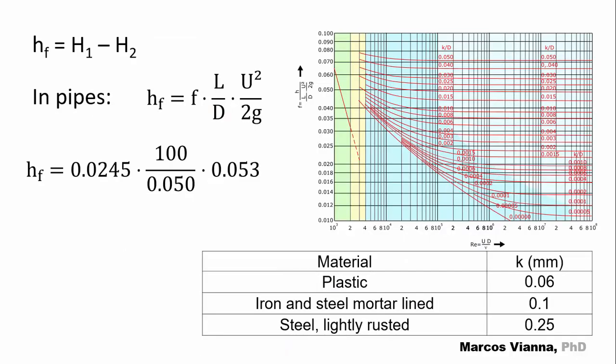Bringing those values to this expression, we find the head losses in the pipes, 2.597 meters.